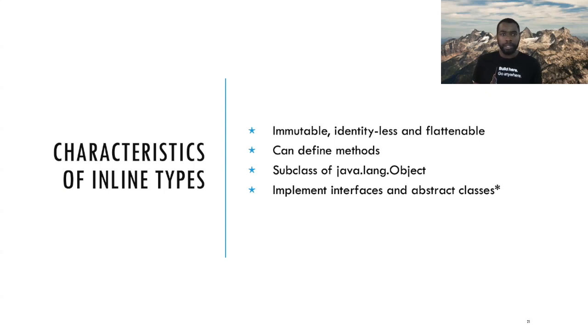Some of the other characteristics of inline types - we've seen that they're immutable, identityless, and flattenable. But they can also define methods. Unlike primitive types which need to be boxed to the object equivalents in order to call methods in them, inline types don't need this. You can define methods and you can call methods in them directly. They can implement interfaces. They can implement abstract classes with some restrictions. These abstract classes cannot have any fields and they need to have an empty init method. They subclass object and they also support the object's APIs like equals and toString. But their behavior is a little different because they don't have identity.